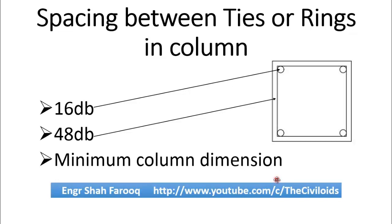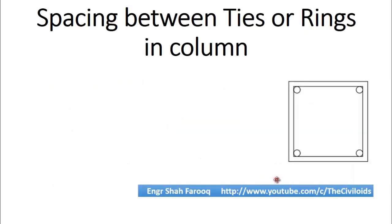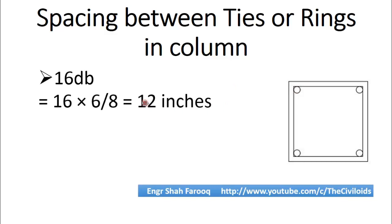Now we will do a practical example determining the spacing between ties or rings in the column. Starting from the first equation, which is 16db: the longitudinal bar used is a number 6 bar, so the diameter is 6/8 inches. Putting that into the equation we get 16 multiplied by 6/8, which gives us 16db equal to 12 inches.